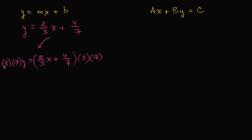So the left-hand side becomes 21y. 3 times 7, of course, is 21. And we would distribute the 21. 21 times 2/3, well, 21 divided by 3 is 7 times 2 is 14. So it's going to be 14x. And then 21 divided by 7 is 3 times 4 is 12. So just like that, I was able to get rid of the fractions.